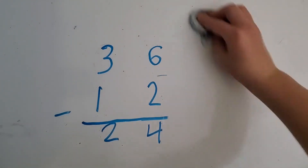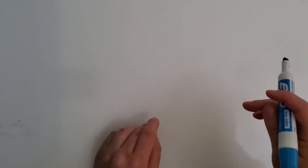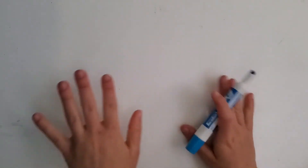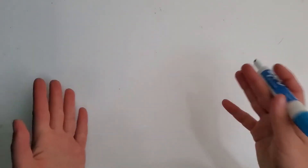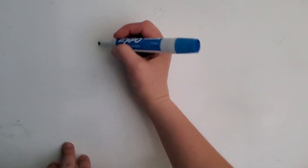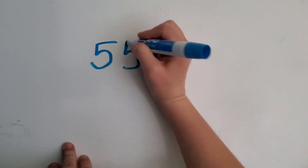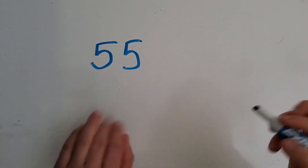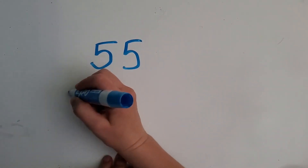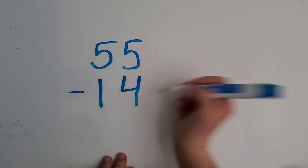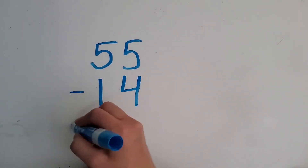Let's try one more and we're not going to use a chart or models at all. Here's the story: a store has 55 birthday banners. 14 birthday banners are red. How many birthday banners are not red? That's our question. What is our whole? 55 birthday banners. And 14 of them are red; we want to figure out how many are not red. So that means we need to subtract 14 from 55.